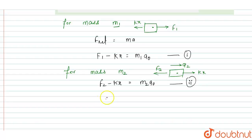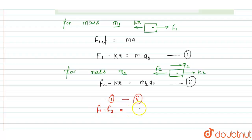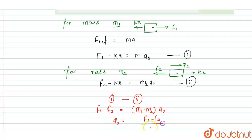Subtracting Equation 2 from Equation 1, we can write F1 minus F2 equals M1 minus M2 into A0.